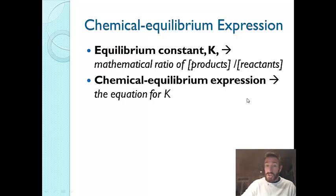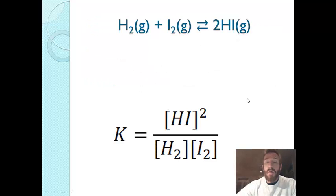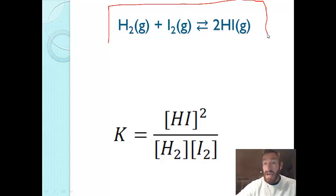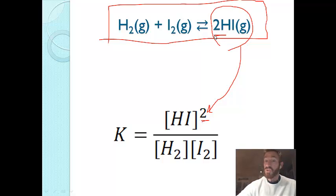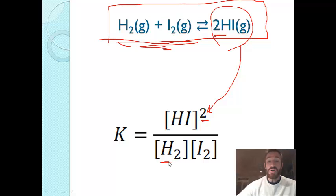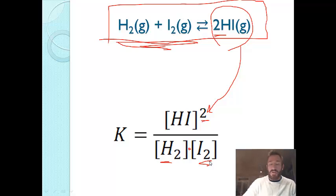The chemical equilibrium expression is a mathematical ratio of products divided by reactants, each raised to their coefficient from the balanced equation — this is the equation for K. For example, for the reaction H2(g) + I2(g) ⇌ 2HI(g), we put the product HI in the numerator raised to the second power (coefficient of 2), and H2 and I2 in the denominator. If you're given the concentrations, you simply insert them and solve for K.